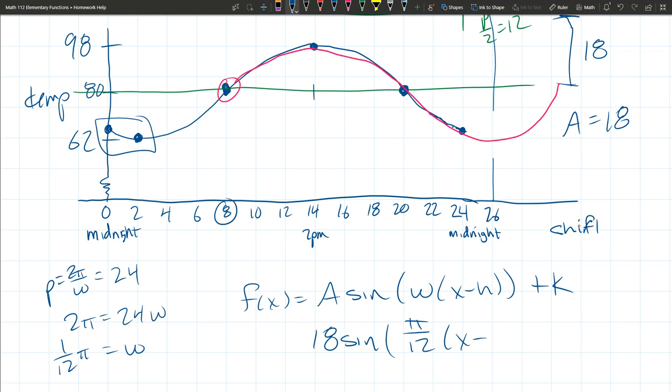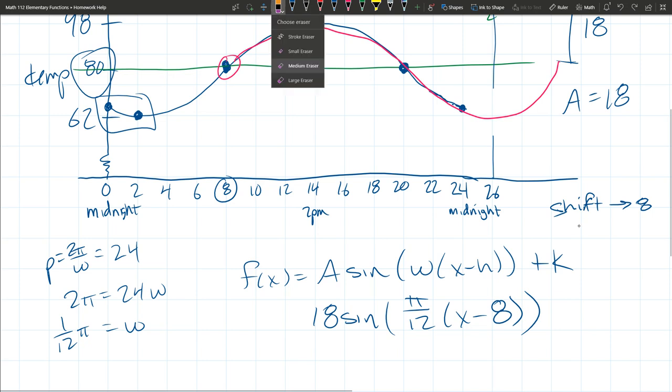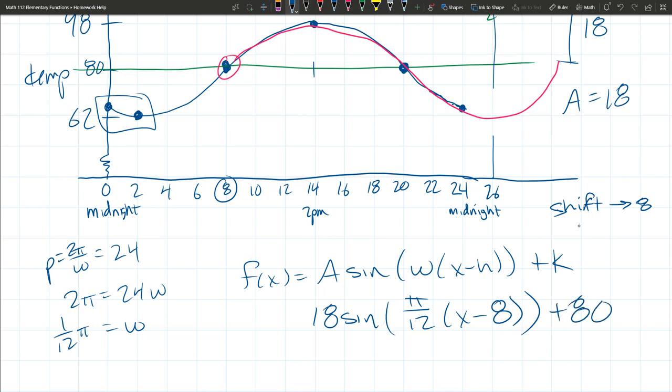So it's coming along here. Now what's k? It should be pretty clear from the graph. k is the vertical shift. And this graph got shifted up, in this case, 80. We still haven't answered the question, but we got a really nice function out of it. Look at this.